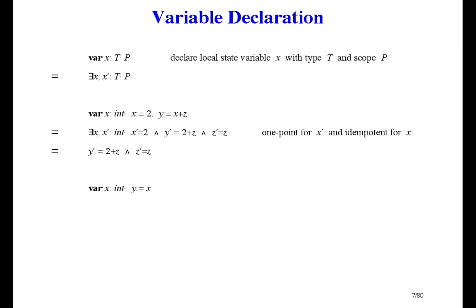Here's an example in which the local variable is used but not initialized. Removing the program notations, we get exists x and x prime in int such that x is unchanged, y prime equals x, and z is unchanged.